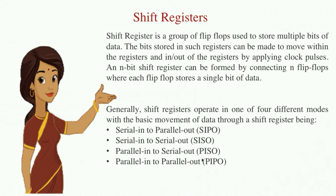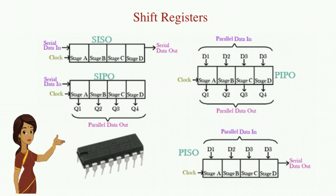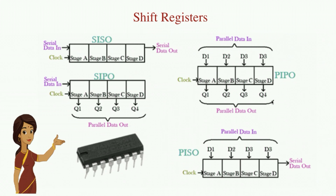There are basically four types of shift registers: serial in parallel out, serial in serial out, parallel in serial out, and parallel in parallel out. In a serial in serial out register, data is sent and received through a single pin. In serial in parallel out, data is transmitted through a single pin whereas you have four parallel data outputs. In parallel in parallel out, we have four input data and four output pins.